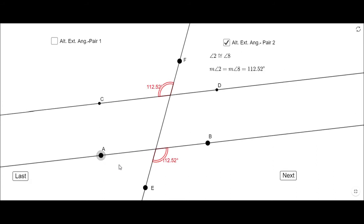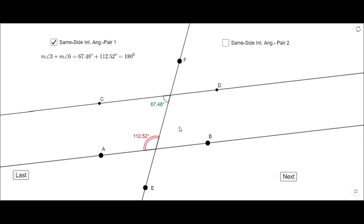Let me uncheck this. Again, always you want to uncheck the boxes. I'm going to move to the next set which are called same side interior angles. So these are interior angles on the same side of the transversal. We have two pairs. The first one is 3 and 6.